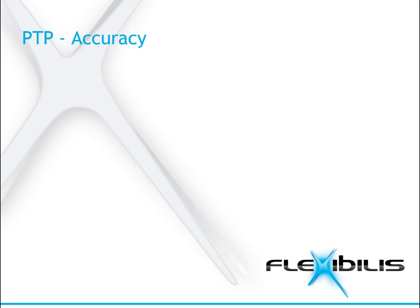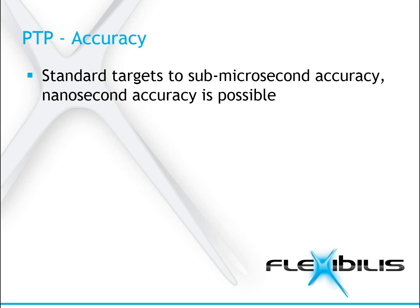PTP standard targets sub-microsecond accuracy, but nanosecond accuracy is also possible. The best results Flexibilis has achieved have been one nanosecond accuracy peak to peak with gigabit fiber optic Ethernet. However, that requires special hardware components, for example high stability oscillators. Typically the accuracy achievable with general FPGA evaluation boards is some hundred nanoseconds.